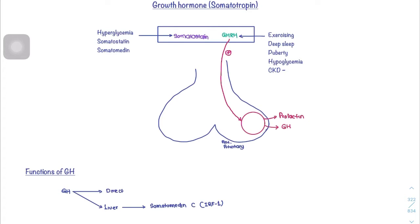Growth hormone releasing hormone is increased during states of exercise, deep sleep, and puberty — that's when growth is highest. It is also increased during hypoglycemia (low blood sugar) and chronic kidney disease. In chronic kidney disease, it disrupts both growth hormone and somatomedin C, another name for which is insulin-like growth factor 1 (IGF-1).